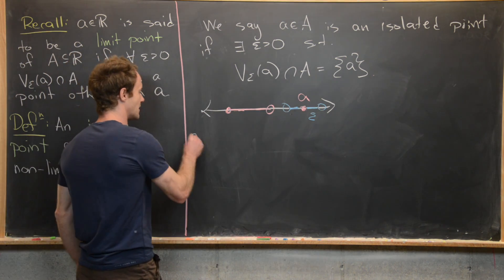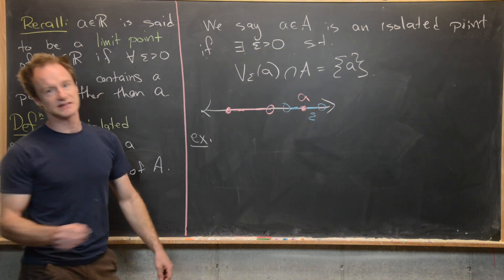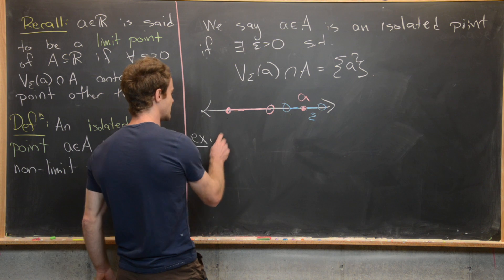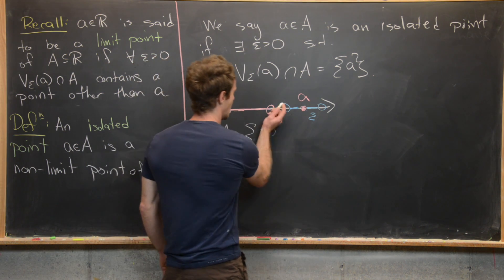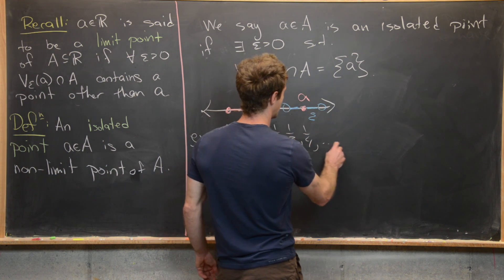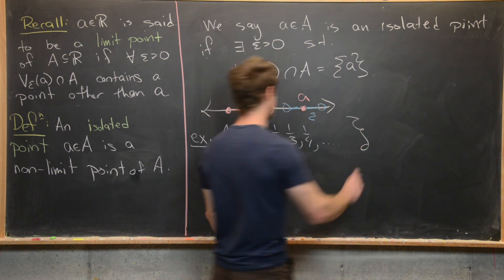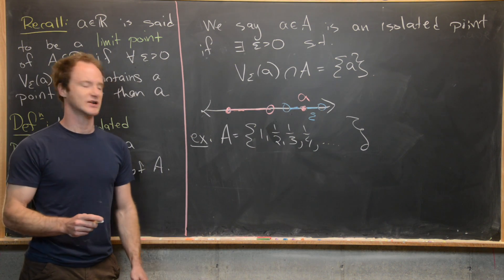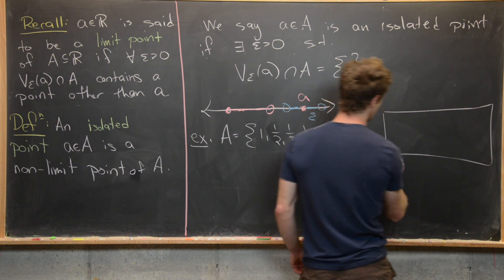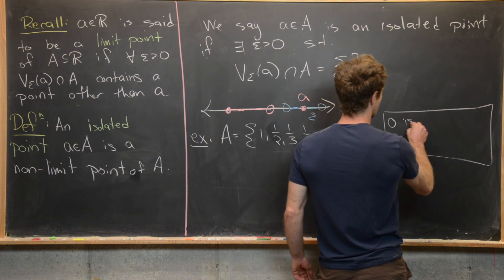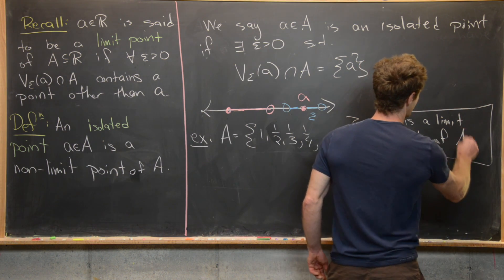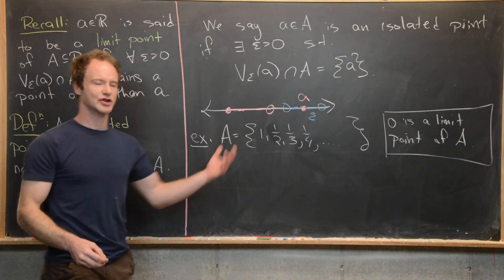Now let's look at some other examples to get a feel for what's going on. Let the set A equal {1, 1/2, 1/3, 1/4, ...} — all reciprocals of the natural numbers. From the last video, we found that zero is a limit point of this set A, which was fairly easy to show.